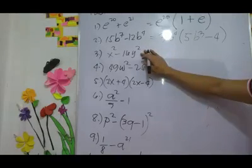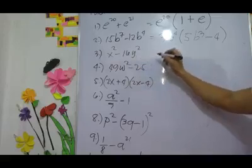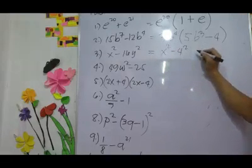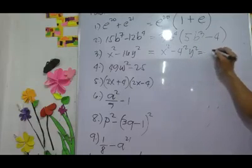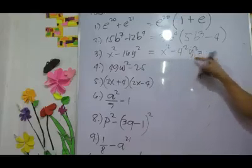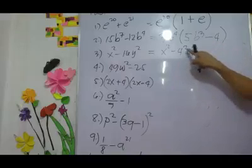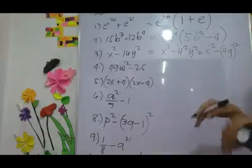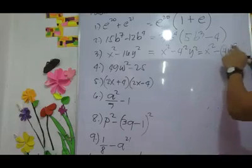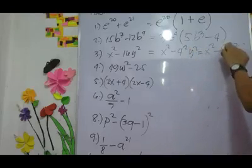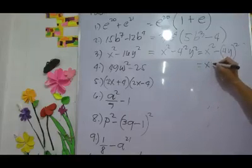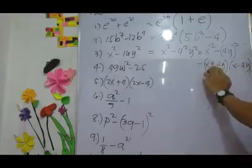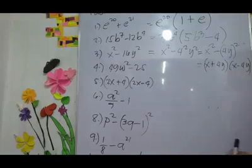Next, number three — this is the difference of two squares. We have 16, so we express it in exponential form: x² minus 4², because 16 is 4 squared. So we have x² minus (4y)², since 2 is the common exponent for both. Since this is already the difference of two squares, we can factor it as (x plus 4y)(x minus 4y) — one must be positive and the other negative.